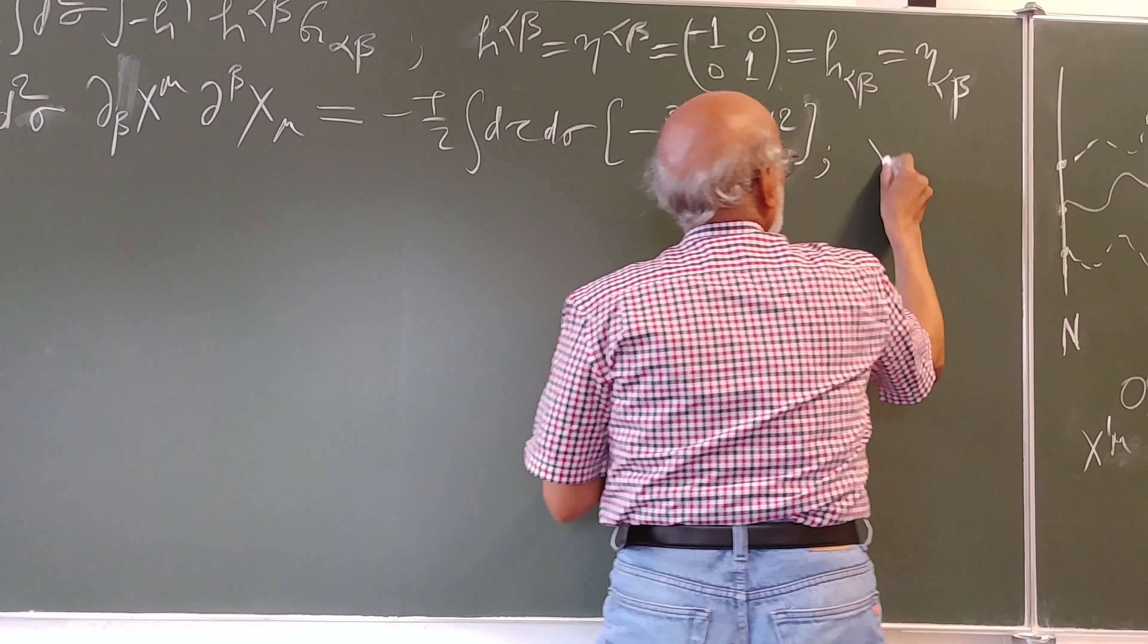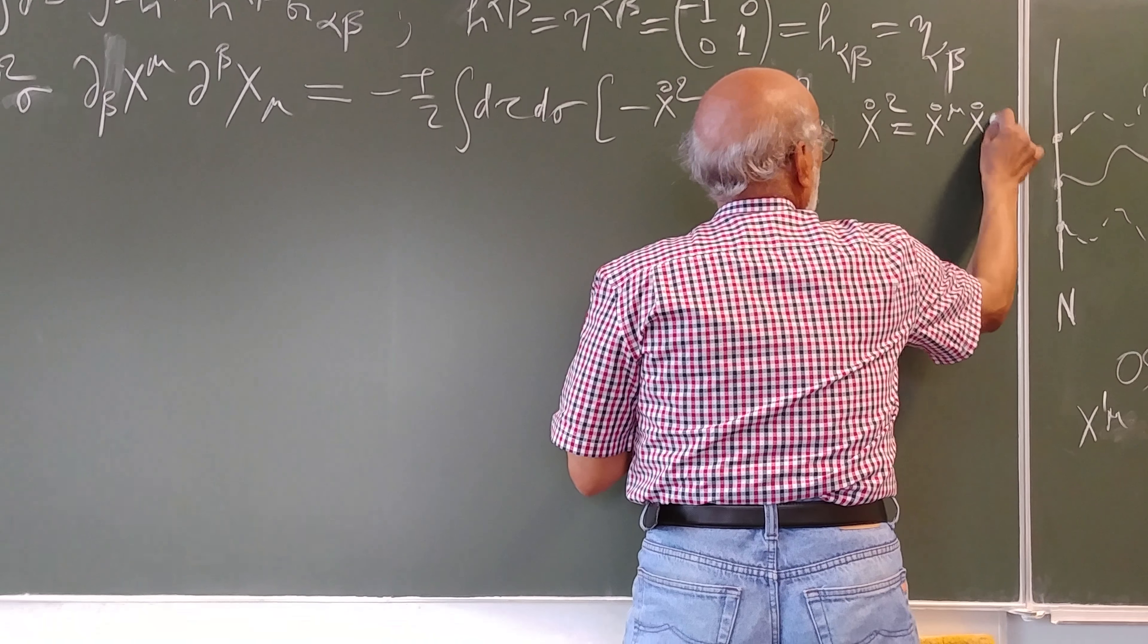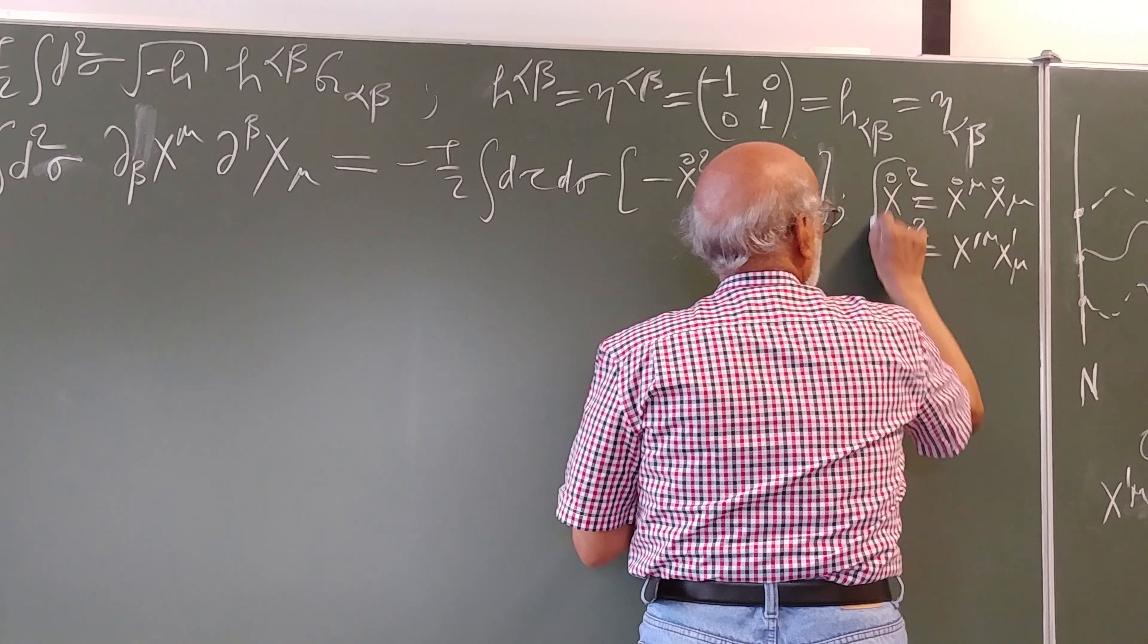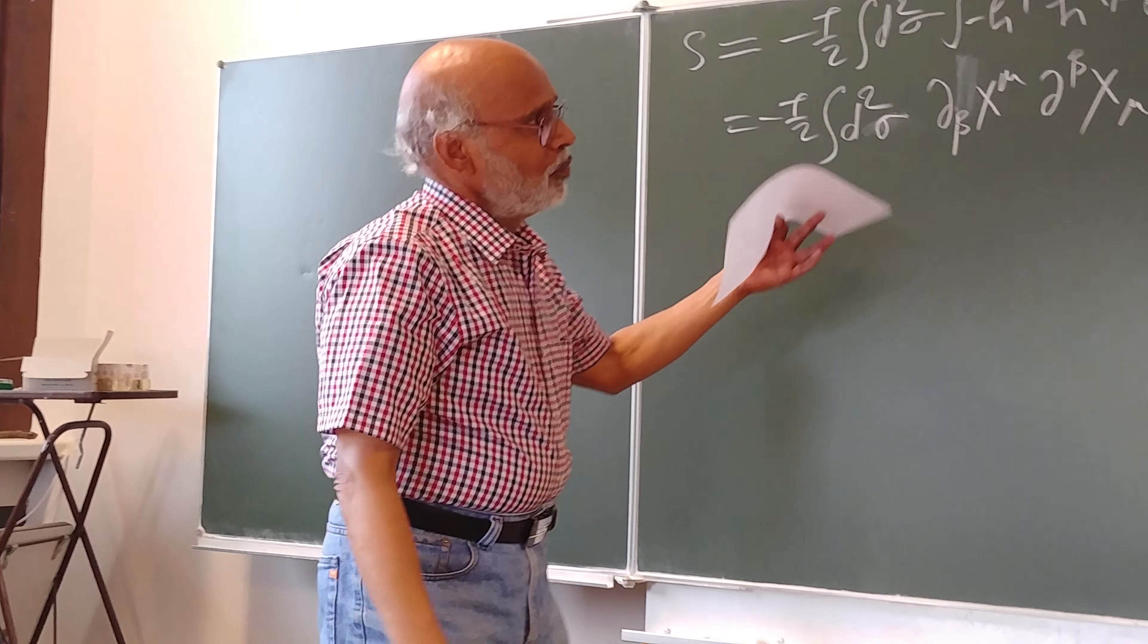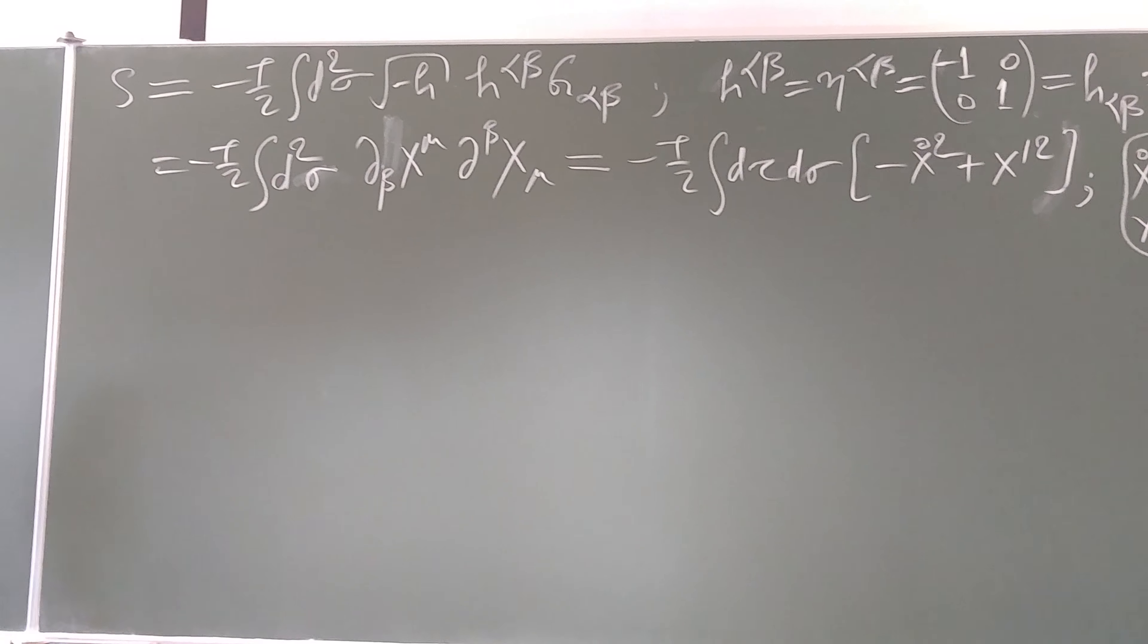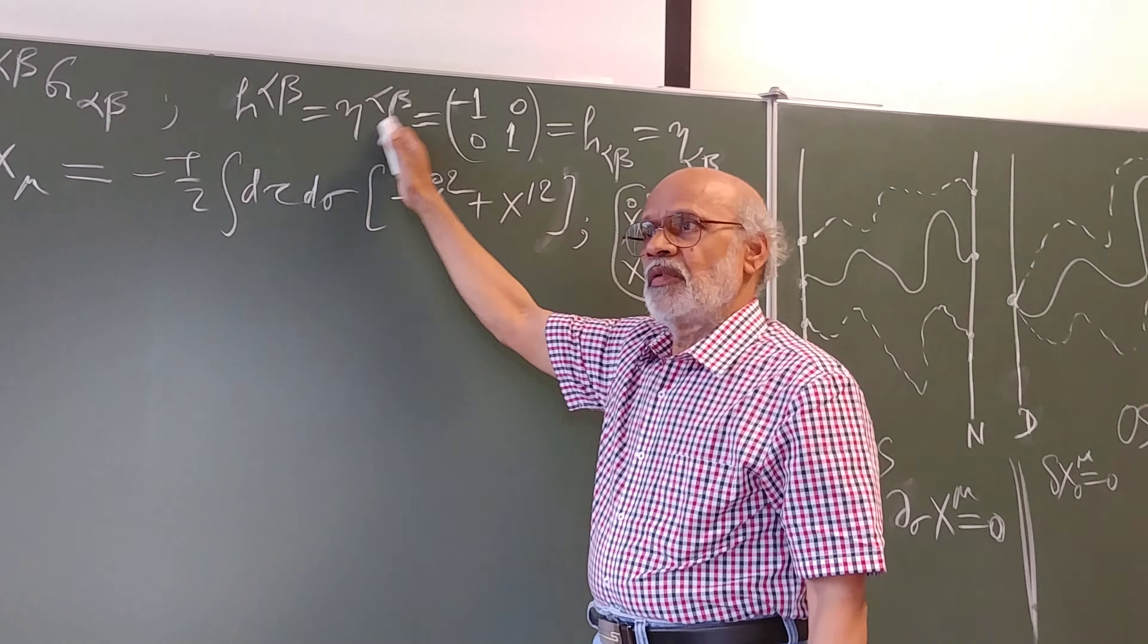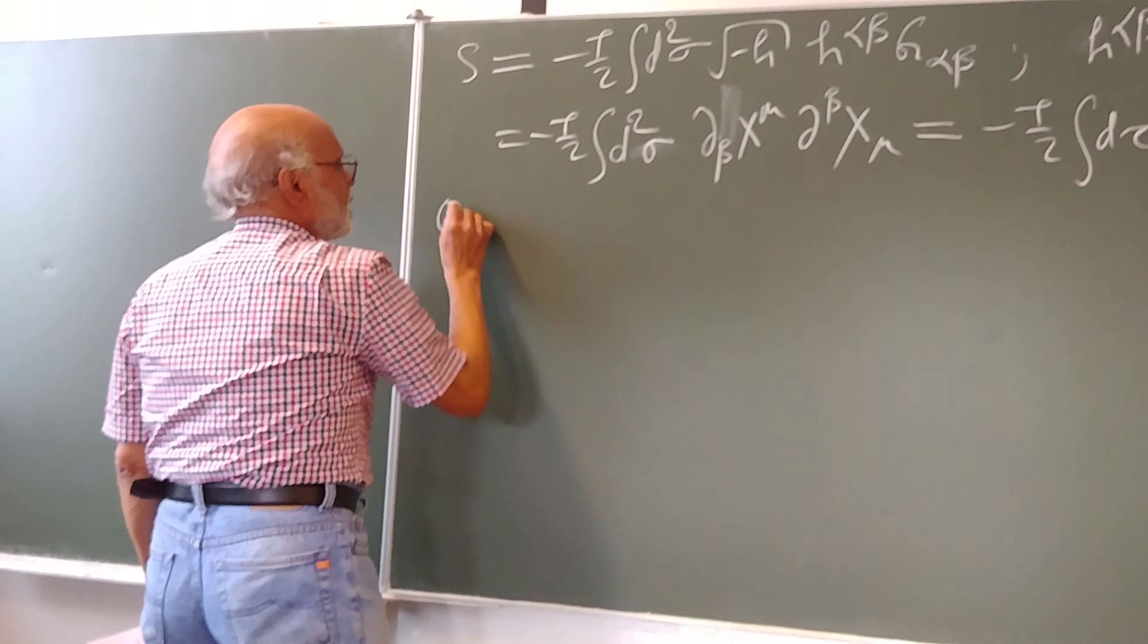minus x dot square plus x prime square. Here, x dot square is x dot mu x dot mu, x prime square is x prime mu x prime mu. And then we now know it fairly well this action in the conformal gauge fixing eventually refers to this when we transform our auxiliary field from a curved symmetric to a flat metric.